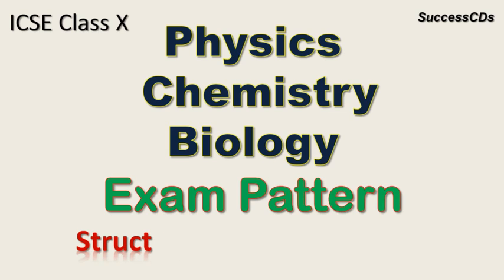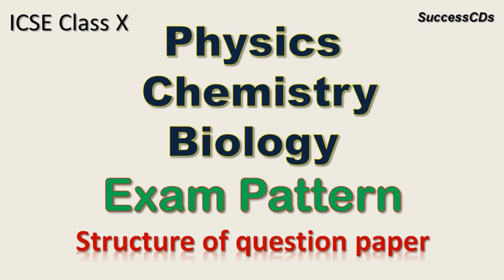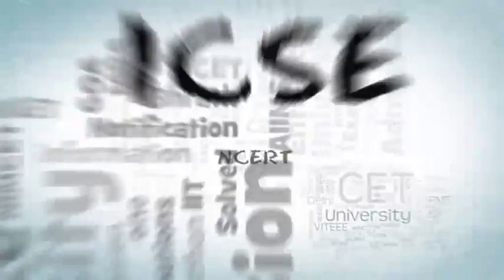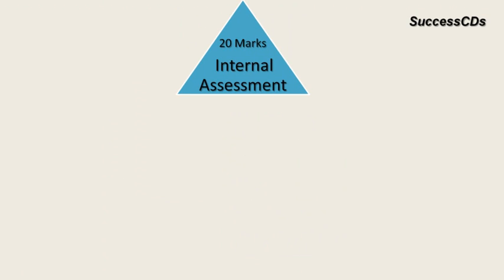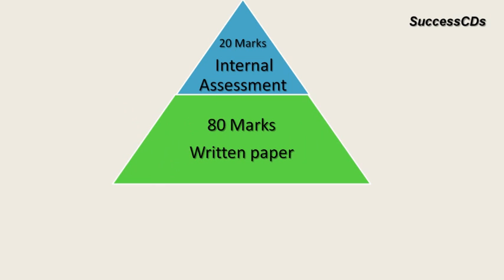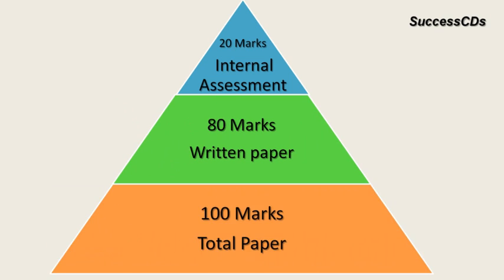I will talk about the exam pattern and the structure of the question paper. Your science paper in all comprises of three parts, that is Physics, Chemistry and Biology. All three of these carry 20 marks internal assessment and the written paper carries 80 marks weightage. In total, all three parts will be given 100 marks in your paper.